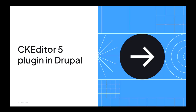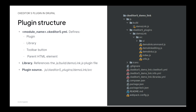So how do we define the plugin in Drupal? We start from the CKEditor 5 YAML file, where we describe and define things: namely the plugin itself, the Drupal library which will serve this plugin, the toolbar button, and the parent HTML element. For most plugins, the parent HTML element is the paragraph — it's the element we want to attach our plugin (our link, in our case) to. The Drupal library is just the JS code minified with Webpack.